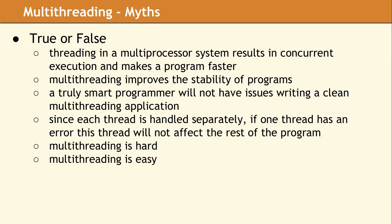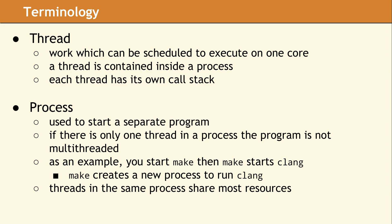Here is a list of some observations we have heard from other programmers. A multithreaded program is not inherently difficult to write. The truth is, a multithreaded program is hard if the problem you are trying to solve is complicated. In order to write multithreaded programs, we need to work with threads. A thread is a set of work which can be scheduled to execute on one core, and each thread belongs to a process but has its own call stack within that process.